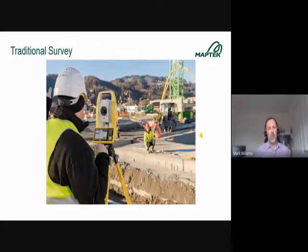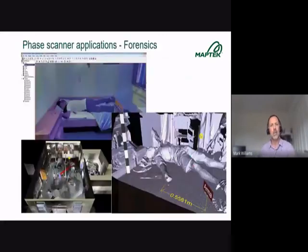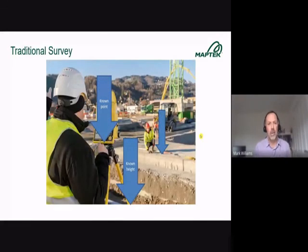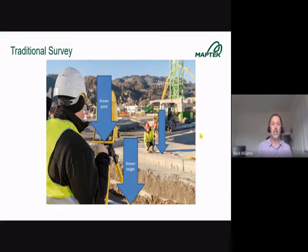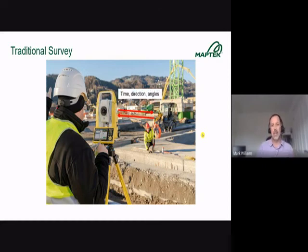Before covering the last scanner type — time of flight — let's look at a traditional survey method. A traditional surveyor uses a theodolite or total station at a known point with a known height. A second person carries a staff with a prism set to a known height. A laser is fired at the prism, reflected back, and the time, direction, and angle give the distance measurement.